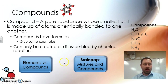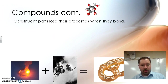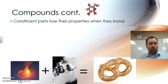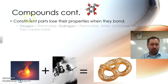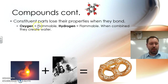Now that you've watched that video on elements and compounds, let's continue. Here's some more information on compounds. One of the interesting things when you make a compound is that the constituent parts lose their properties — the different parts of a compound behave completely differently. Here's an example. Oxygen is flammable.